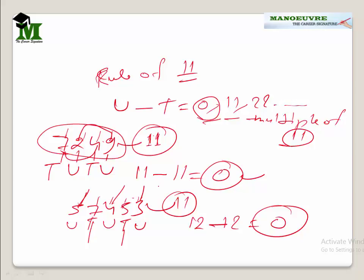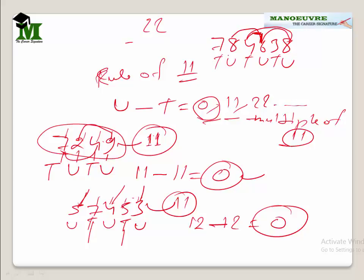If the result is not 0 or a multiple of 11, the number is not divisible by 11. For example, take 784638. Positions alternate u, t, u, t, u, t — u digits are 8, 6, 8 and t digits are 3, 4, 7. Sum of u: 8 plus 6 is 14, plus 8 is 22. Sum of t: 3 plus 4 is 7, plus 7 is 14. Difference is 22 minus 14 equals 8. Since 8 is not a multiple of 11, this number is not divisible by 11.